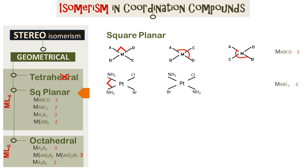This is a case where we have the central metal surrounded by ligands A, B, and C repeated. Here NH3 is repeated and we have two isomers possible — NH3 at 90 degrees in one, and at 180 degrees in the other.